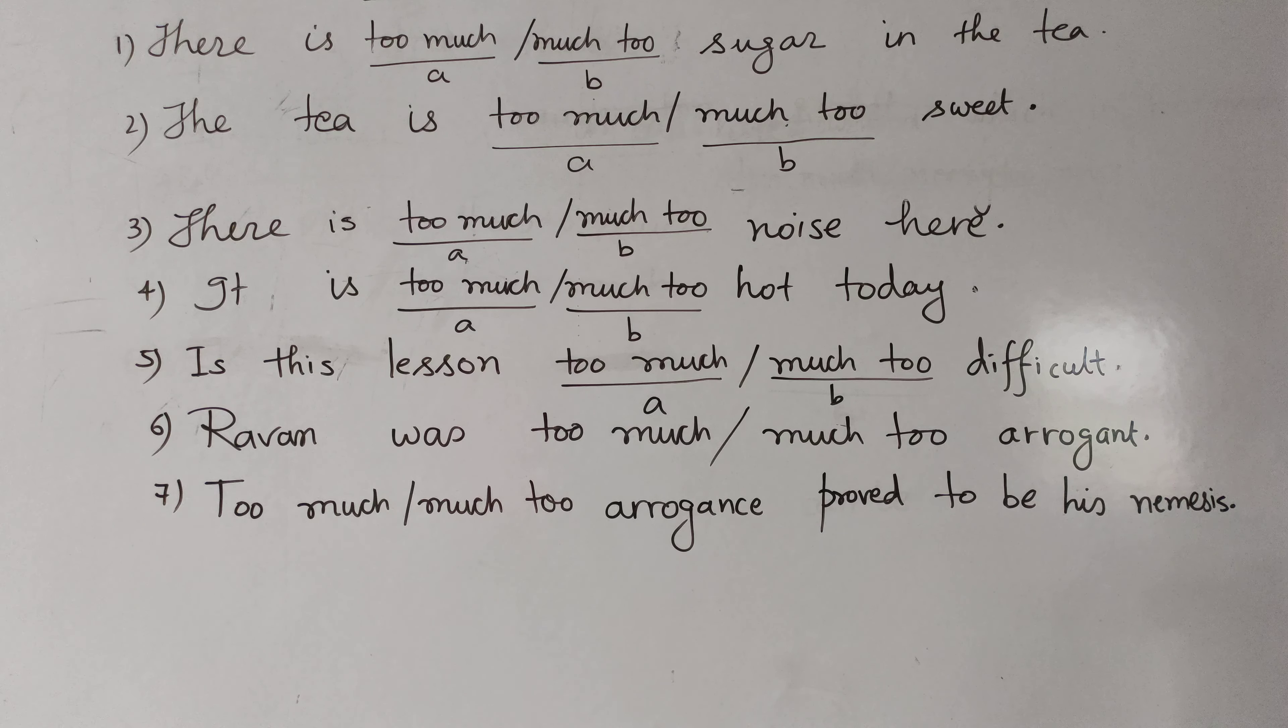Number 7. Too much, much too arrogance proved to be his nemesis. Zarurat se zyadha ghamandi uske patan ka karan bana. Too much, much too arrogance proved to be his nemesis. What will you choose? Too much arrogance. A. Too much arrogance proved to be his nemesis.